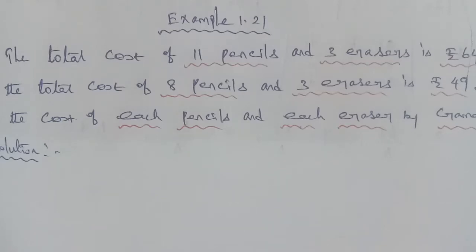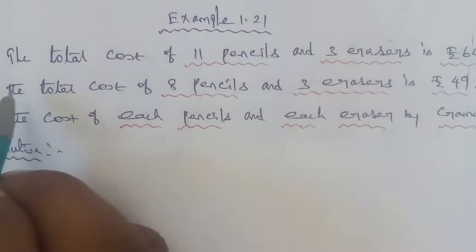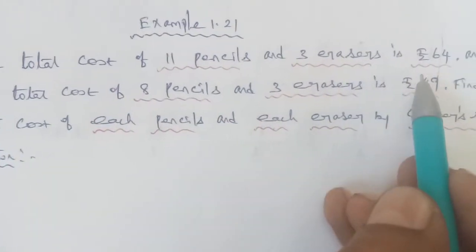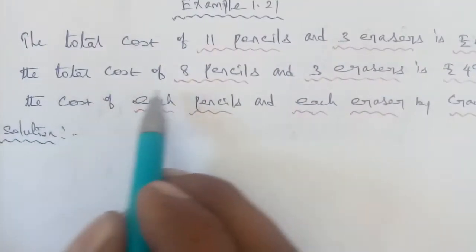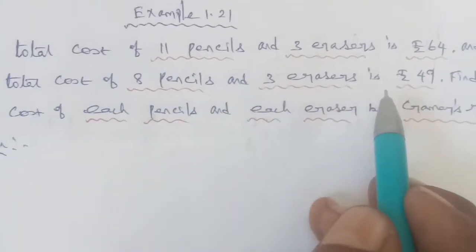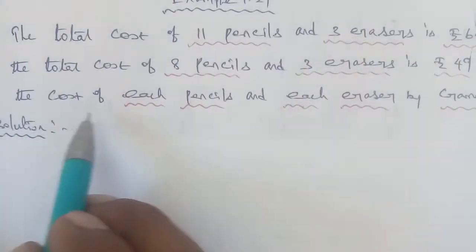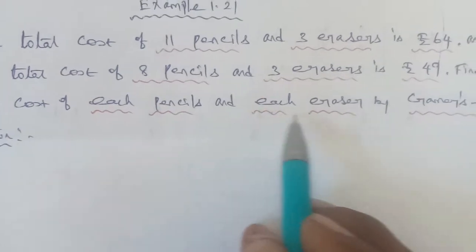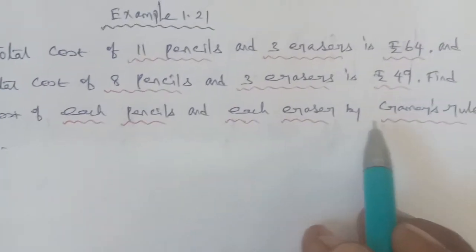Hi students, I am Gopinath, 12th Business Maths, Exam 1.21. The total cost of 11 pencils and 3 erasers is Rs. 64, and the total cost of 8 pencils and 3 erasers is Rs. 49. Find the cost of each pencil and each eraser by Cramer's Rule.